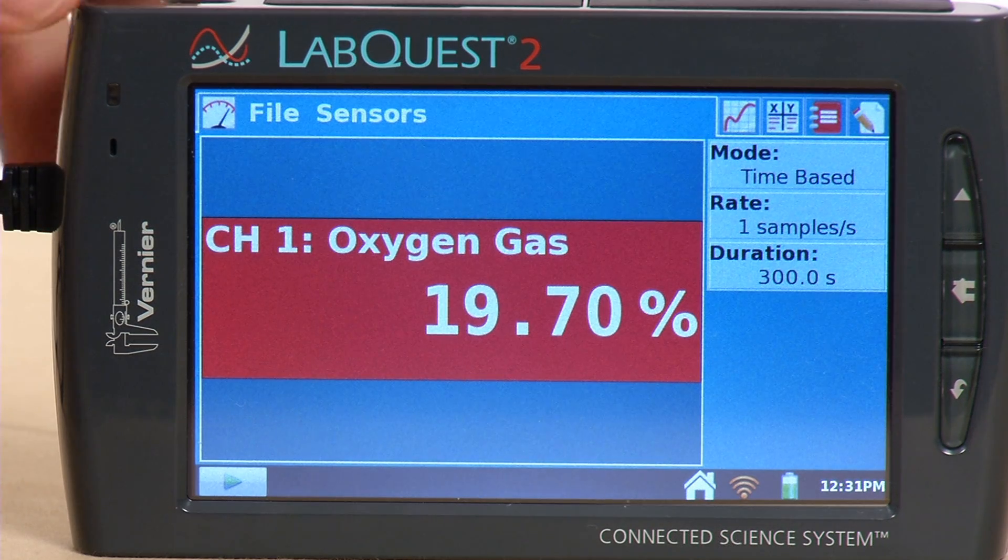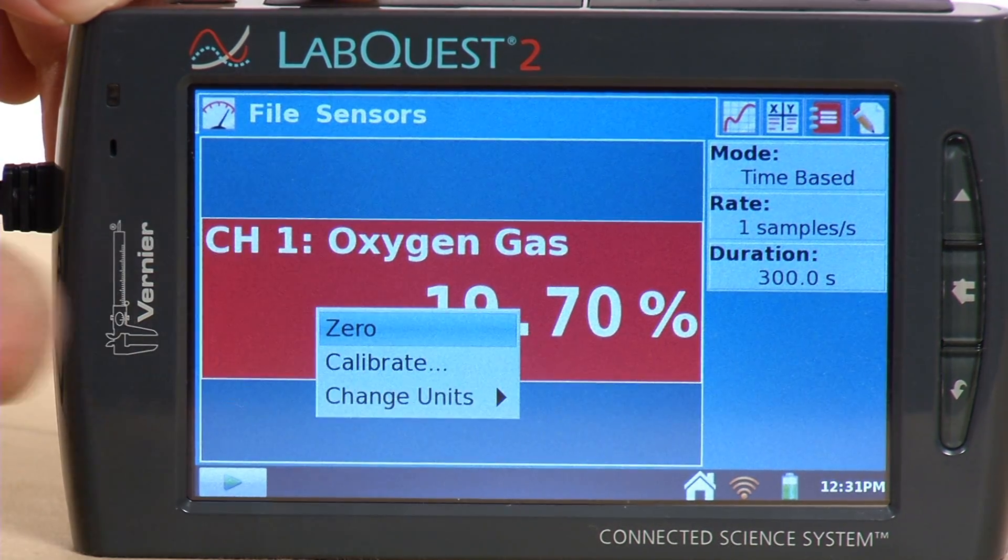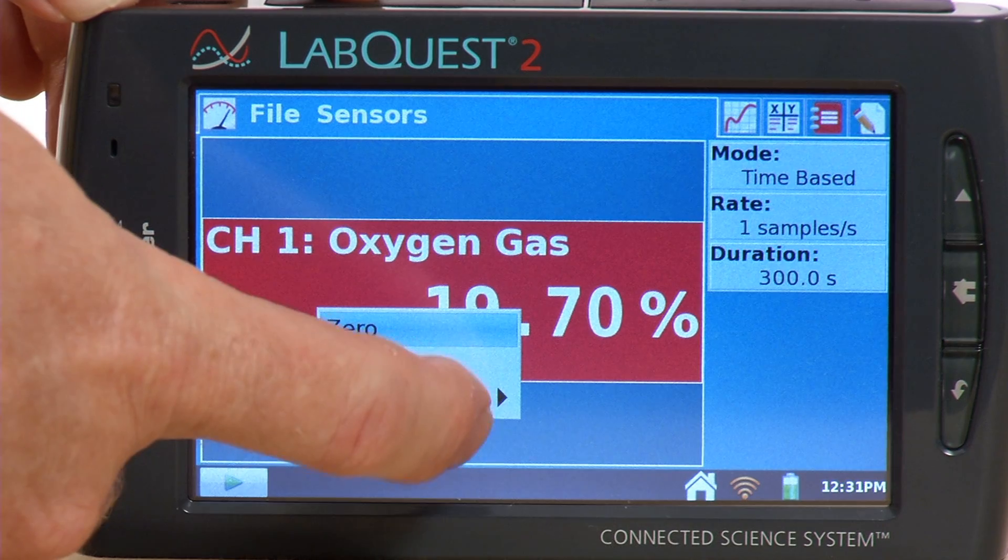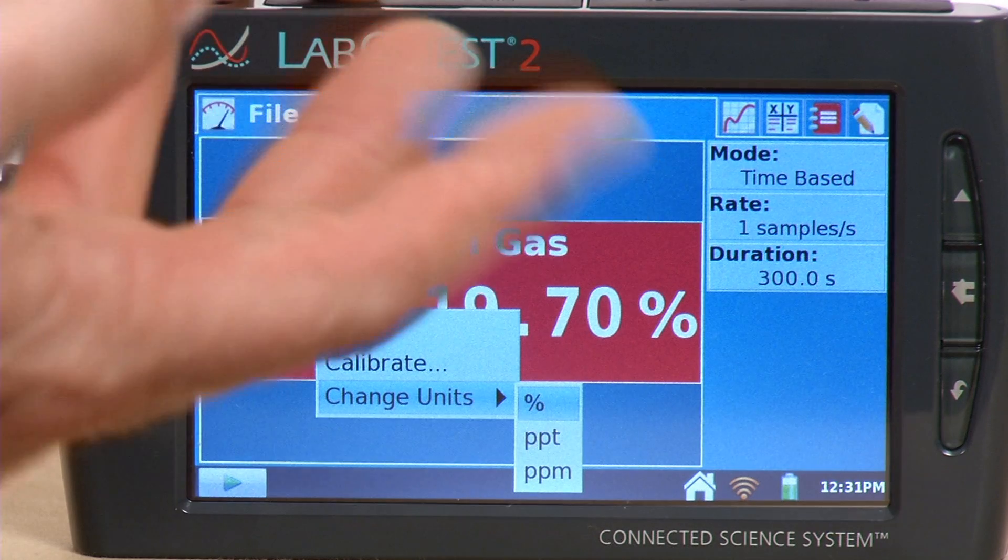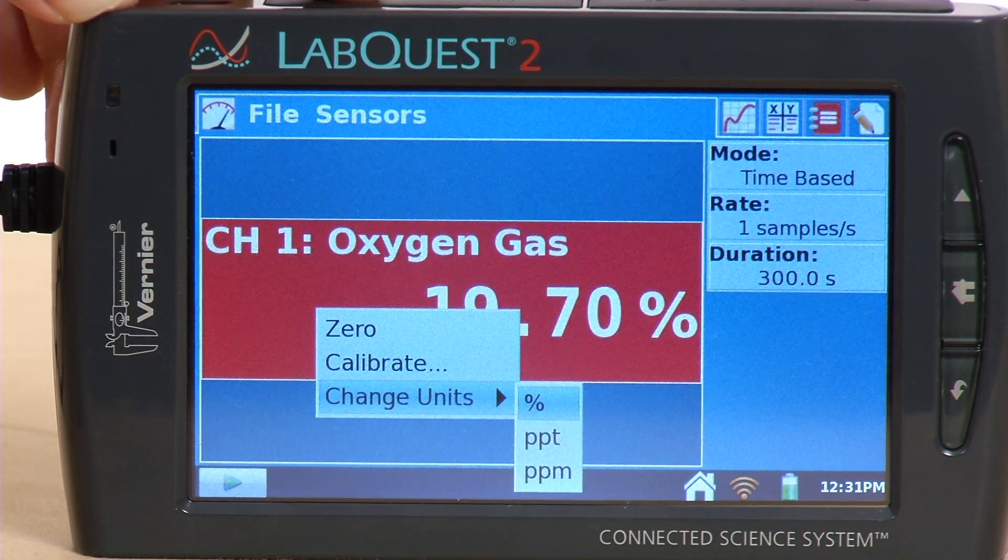If you wanted to change those units, it's easy to do. You tap on the meter itself. You can go and do change units if you would like. So I could do parts per thousand, parts per million, or percent. I'll just leave it like it is here.